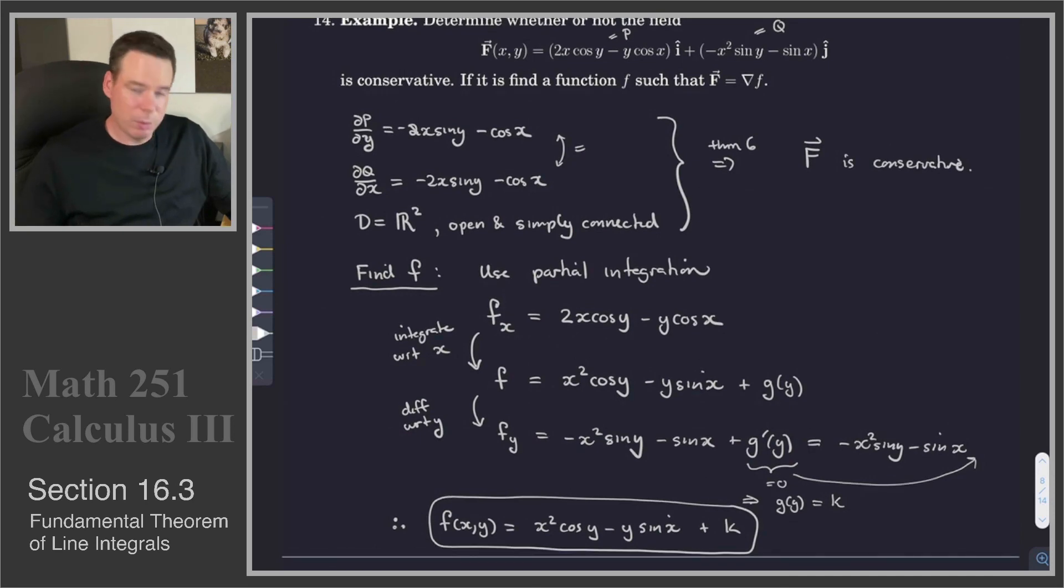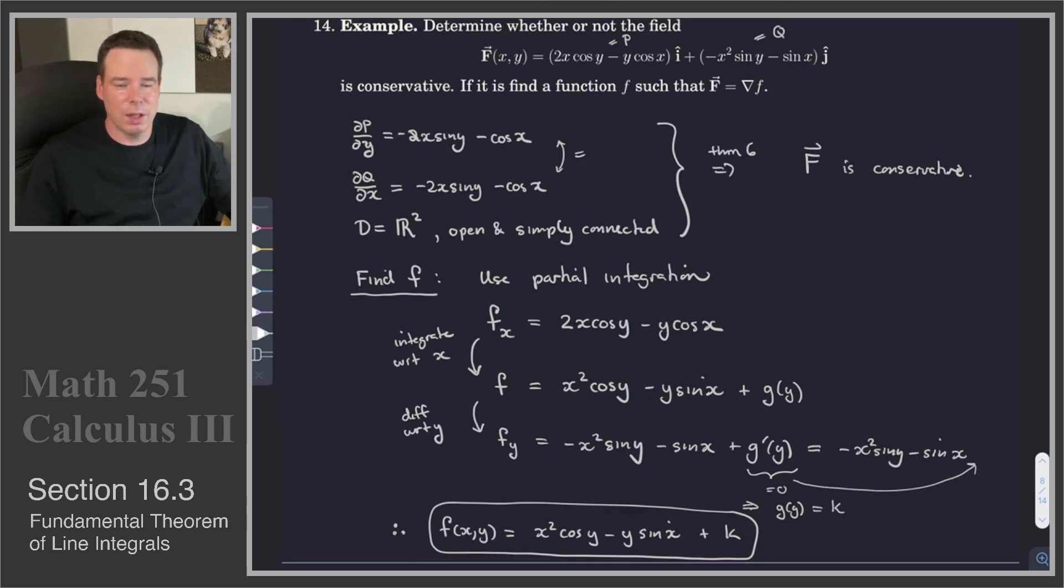And we can go ahead and just double check. What we've done is we've found a function we think is the potential function for our vector field F, big F, so we just take its derivative, differentiate with respect to x, see if we get the function P, differentiate with respect to y, see if we get the function Q. And we do in this case. So we not only have a check for whether a vector field is conservative or not, we also have a method now, this partial integration method, for determining the potential function.